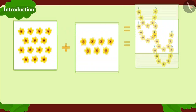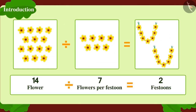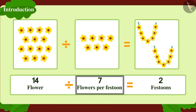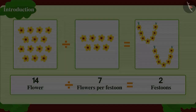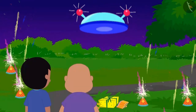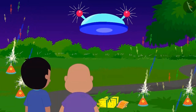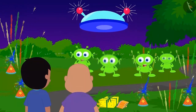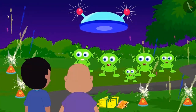Children, can you find the answer to this question and write it in the form of division? Well done, children — you have given the right answer! If we divide 14 flowers into festoons of seven flowers each, we will get two festoons.